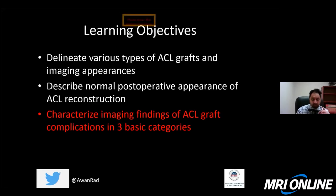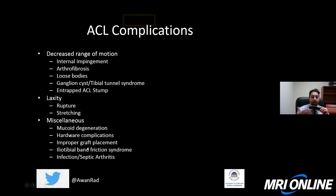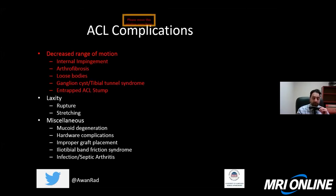There are different complications associated with ACL graft repair. It's helpful to break them down into three basic categories based on clinical symptomatology. Decreased range of motion complications include: arthrofibrosis, internal notch impingement, loose bodies, ganglion cyst, tibial tunnel syndrome, and entrapped ACL stump. Laxity refers to frank tearing or stretching of the graft. Miscellaneous complications — much less common — include mucoid degeneration, hardware complications, septic arthritis, and iliotibial band friction syndrome.